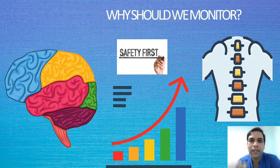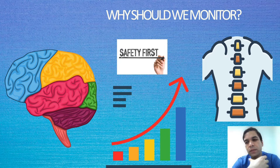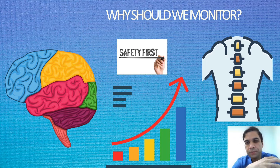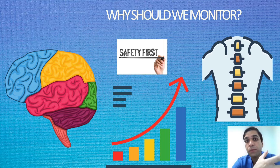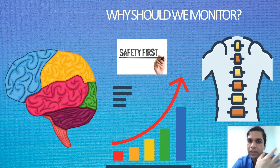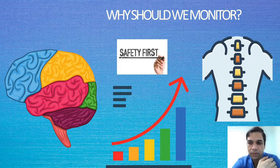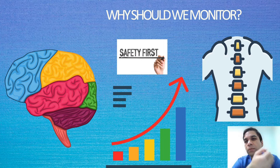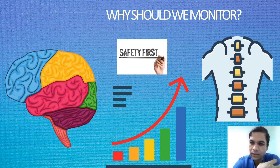So why do we monitor? Basically, during brain and spine surgeries there is always a possibility of damage to neural structures. By monitoring we try to prevent it. Once damage has happened, dealing with brain and spine is very tough. So what we need to do is prevent and anticipate — that is what monitoring helps us.